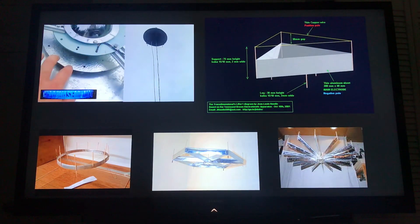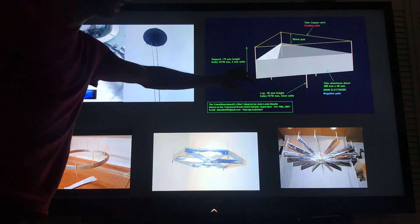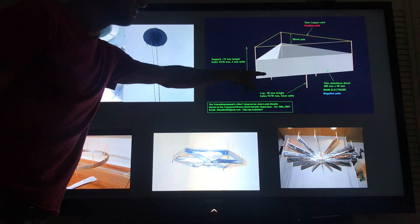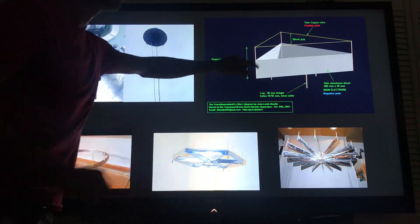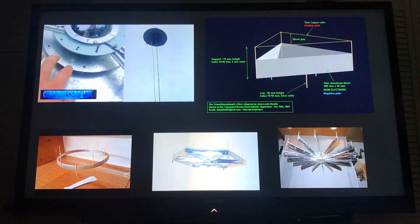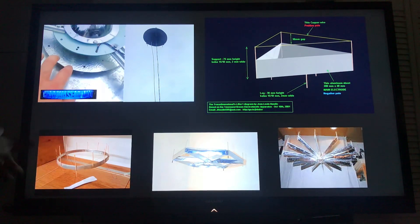And so a very simple electrogravitic device that you can make in your home is called a lifter. Basically this is the positive pole and this would be your negative pole. The negative pole is made of aluminum and it has a bigger surface area than the copper wire which has a very thin surface area. That causes what they say an ion wind but they don't really know what they're talking about because this still works in a vacuum. So basically it creates an electrogravitic field.